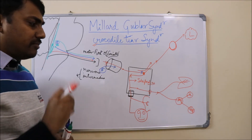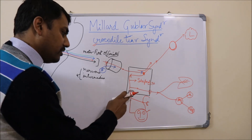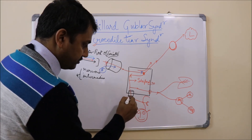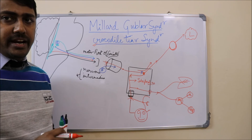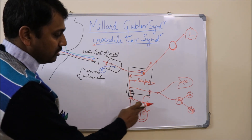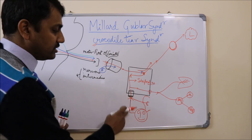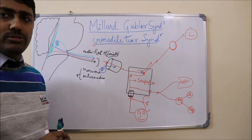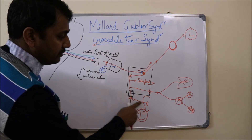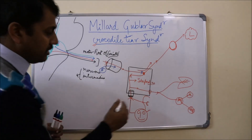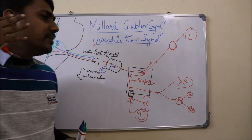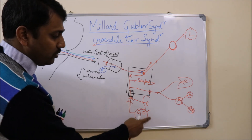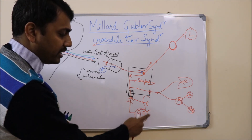Another important site of injury is just after the nerve exits from the stylomastoid foramen. Injury at this level leads to loss of sensation in the external ear as well as facial muscle paralysis. A further site of lesion is just before the nerve pierces the parotid gland, after giving the branch to the external ear. At this site, there is only paralysis of the facial muscles with no associated functional loss.